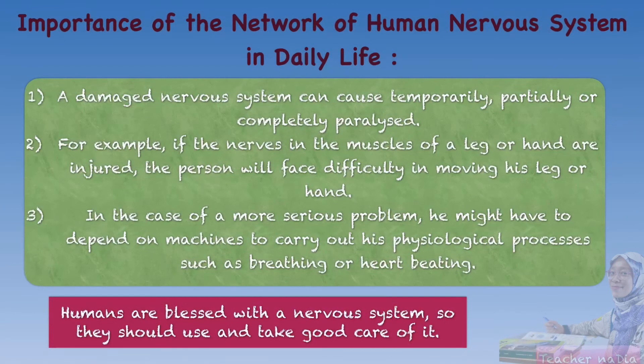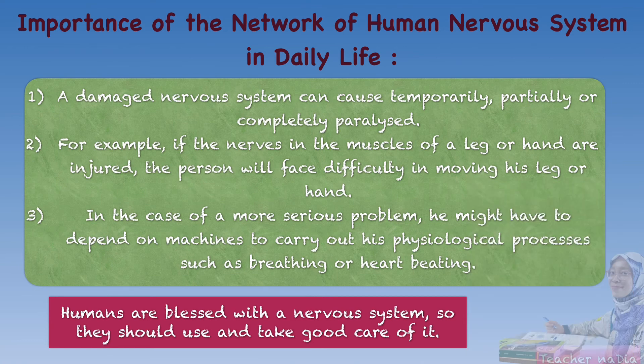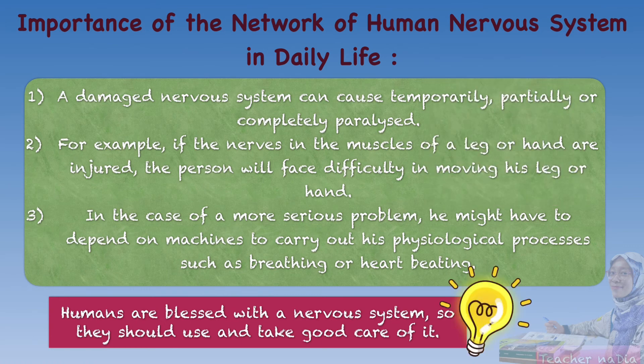We need to know the importance of the network of the human nervous system in daily life. A damaged nervous system can cause temporary, partial, or complete paralysis. For example, if the nerves in the muscle of a leg or hand are injured, the person will face difficulty in moving his leg or hand. In more serious cases, he might have to depend on machines to carry out physiological processes such as breathing or heartbeat. So remember to use and take good care of it.